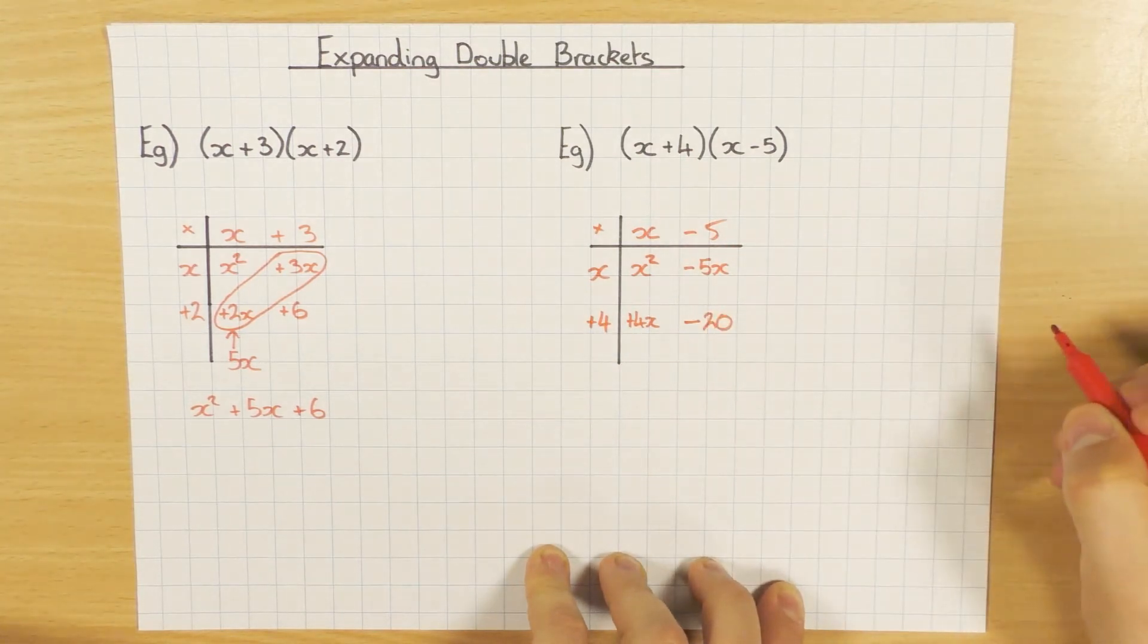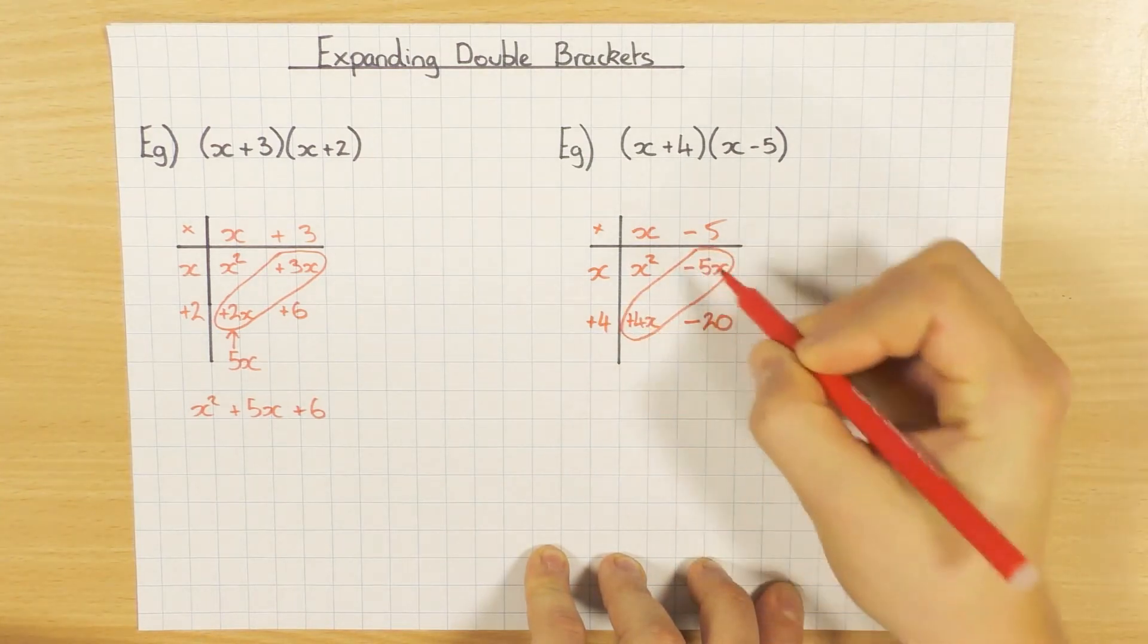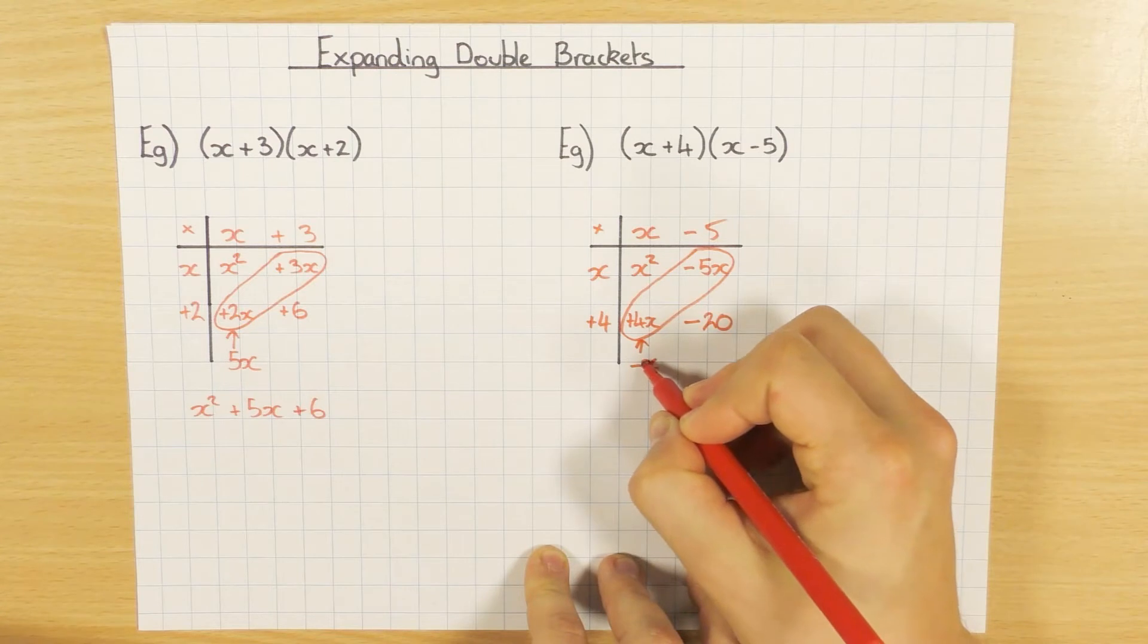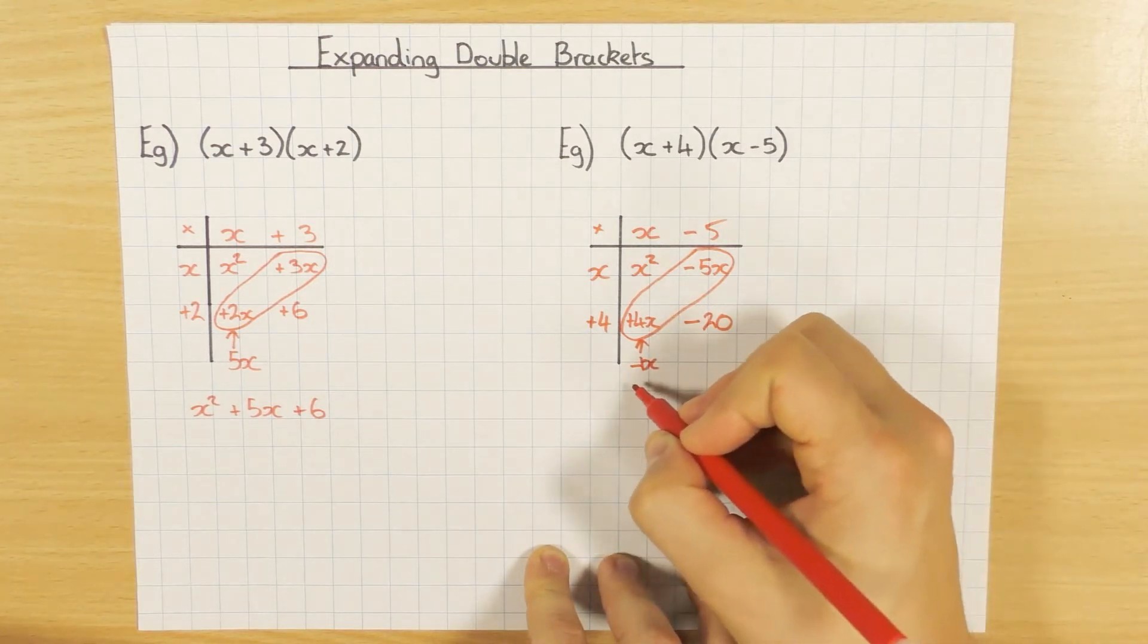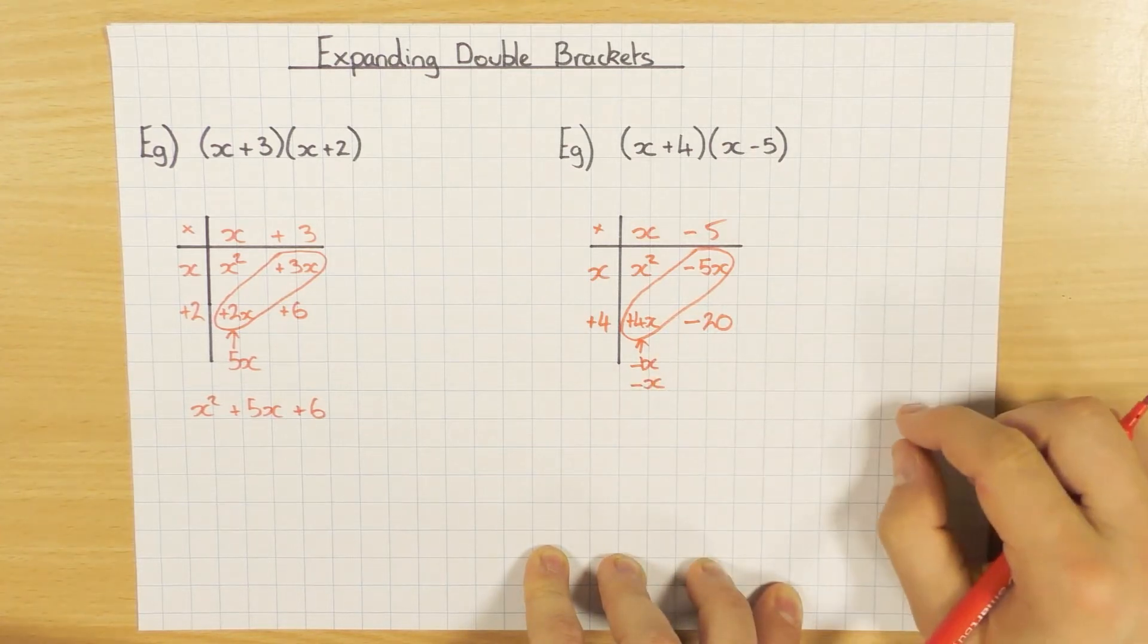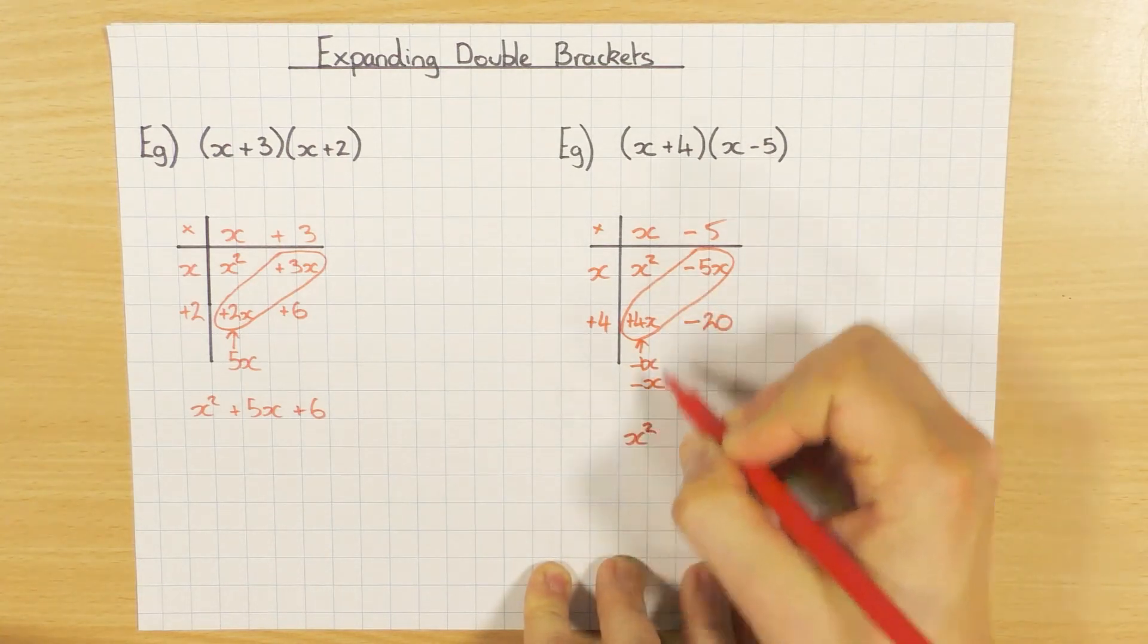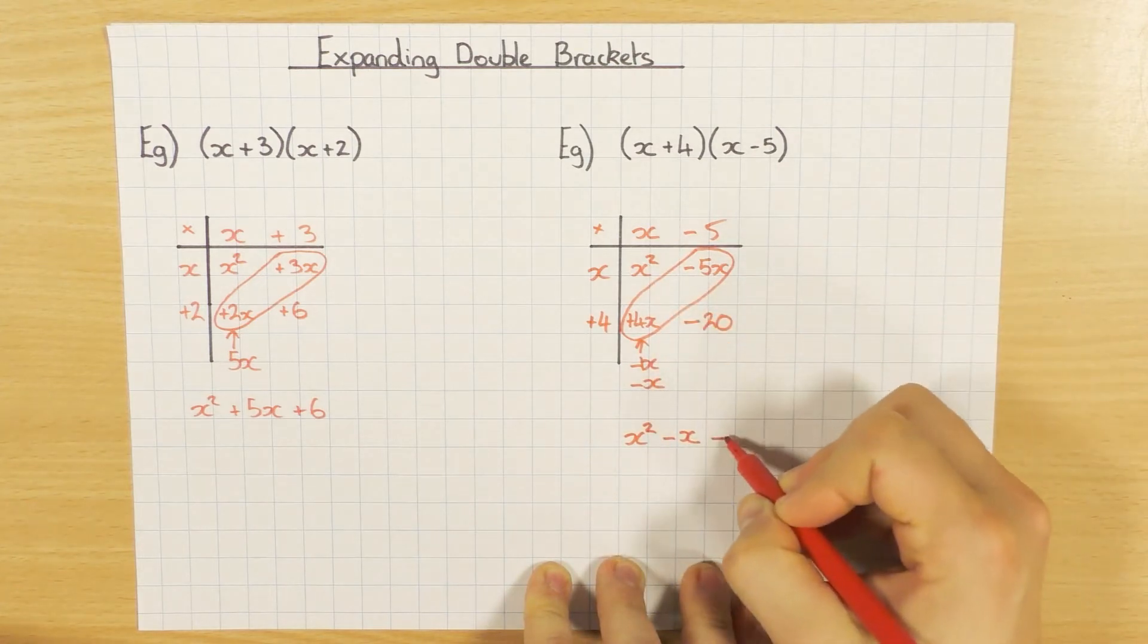So again I filled in my grid, and again I'm going to simplify my x's. So minus 5x plus 4x will give me minus x. Some people put minus 1x, which is fine, however if we are to simplify this we actually leave it as minus x. So make sure you leave it as minus x in your final answer. Speaking of final answer, let's write that out. I have x squared, I have my minus x, and I have my minus 20.